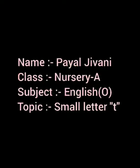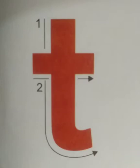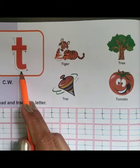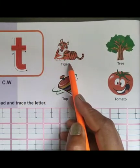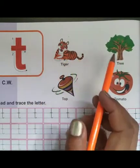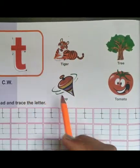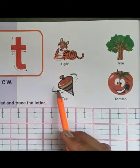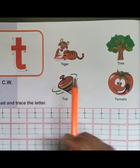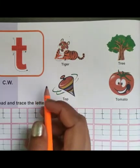Good morning students. Today our subject is English oral, and we are going to learn about small letter T. This is small letter T — T for tiger, T for tree, T for top, T for tomato.